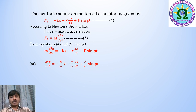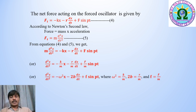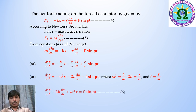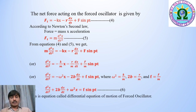Dividing both sides by m, we get d²x/dt² = −(k/m)x − (r/m)(dx/dt) + (F/m) sin(pt). Here, ω² = k/m, so ω is the angular frequency of the oscillator; 2b = r/m is the damping coefficient; and f = F/m is the maximum periodic force per unit mass. Therefore the equation becomes: d²x/dt² + 2b(dx/dt) + ω²x = f sin(pt). This is the differential equation of motion of the forced oscillator.